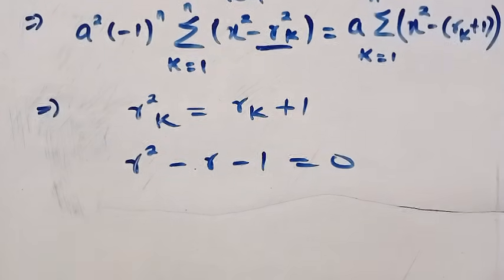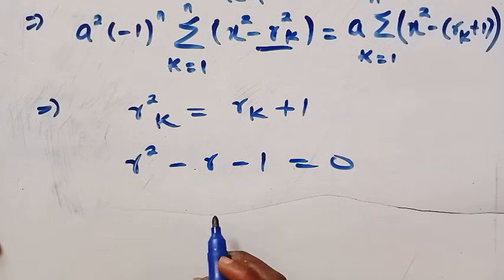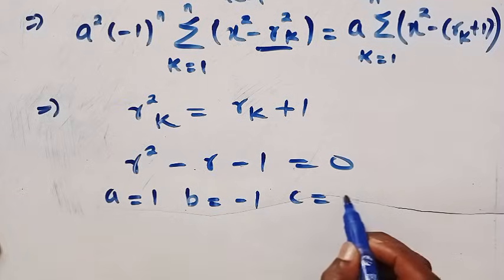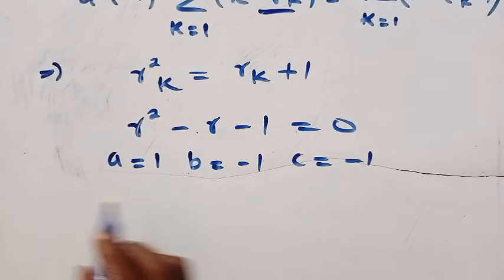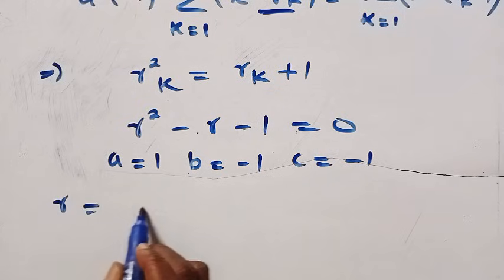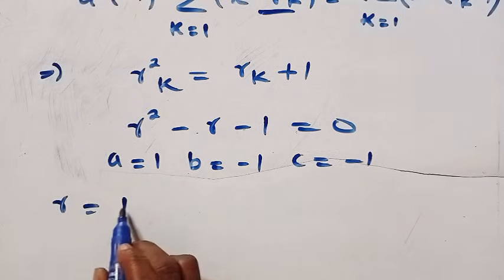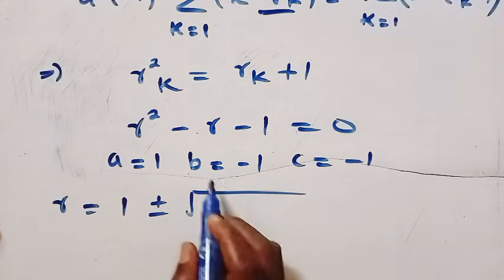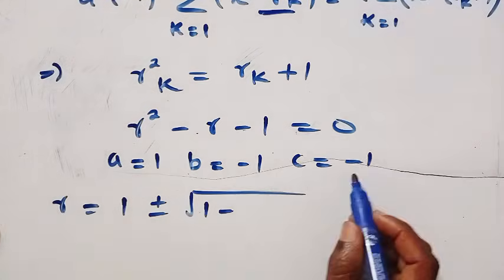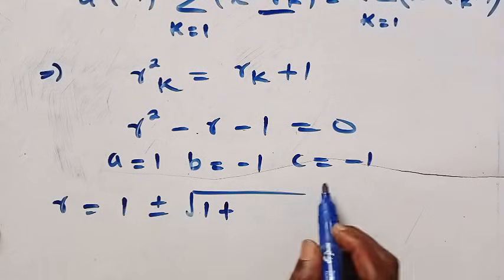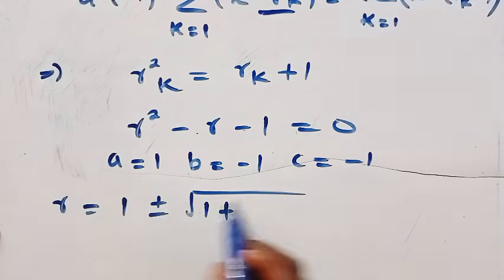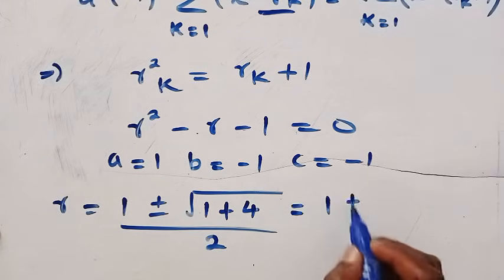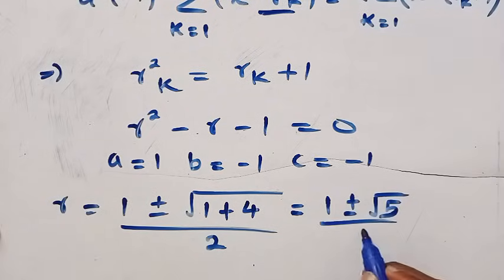This is a quadratic equation, which we solve using the quadratic formula. Here a = 1, b = -1, and c = -1. Using the quadratic formula, r equals (-b ± √(b² - 4ac)) / 2a = (1 ± √(1 + 4)) / 2, which gives us r = (1 ± √5) / 2.